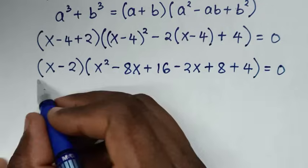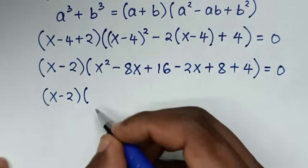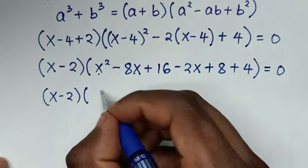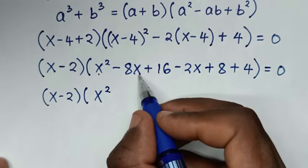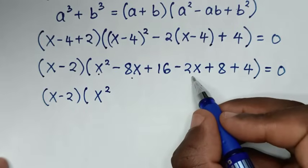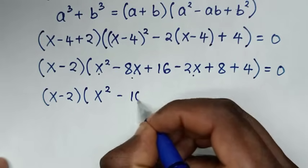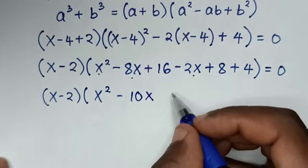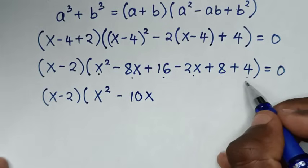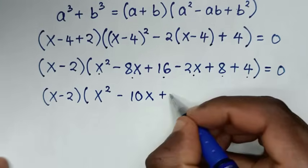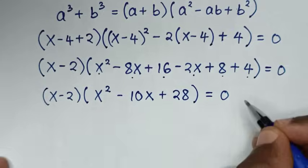So we have (x - 2) times [x² combined x-terms: -8x - 2x = -10x, and constants: 16 + 4 + 8 = 28], giving (x - 2)(x² - 10x + 28) = 0.